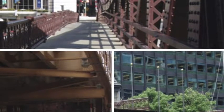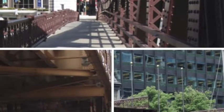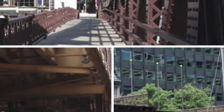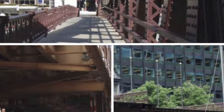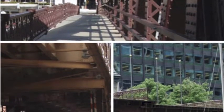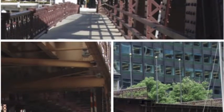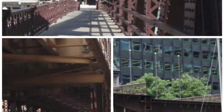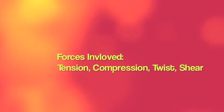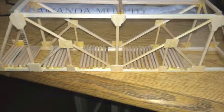The main types of roads are deck, pony, and through. Through goes through the bridge and the deck is below. These are the ways to transport your vehicle across the bridge. The four forces involved in bridges are tension, compression, twist, and shear.